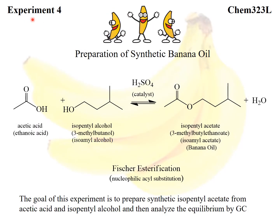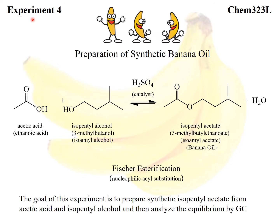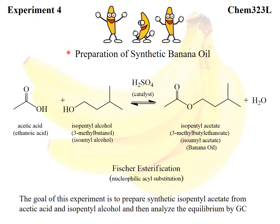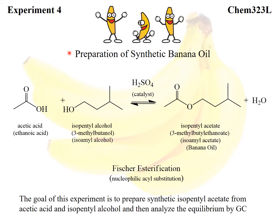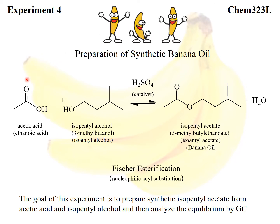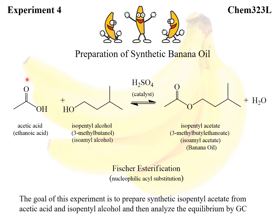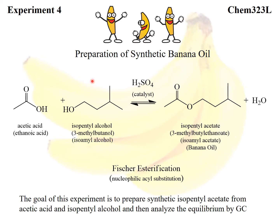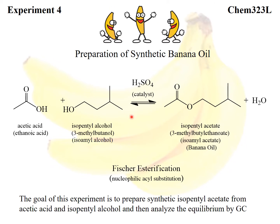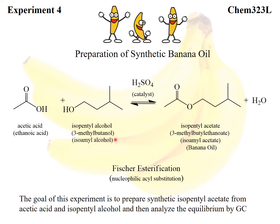This is the pre-lab discussion for experiment number four, preparation of synthetic banana oil. In this reaction, we're going to take acetic acid, also known as ethanoic acid, and react it with isopentyl alcohol, which also has the names 3-methylbutanol and isoamyl alcohol.